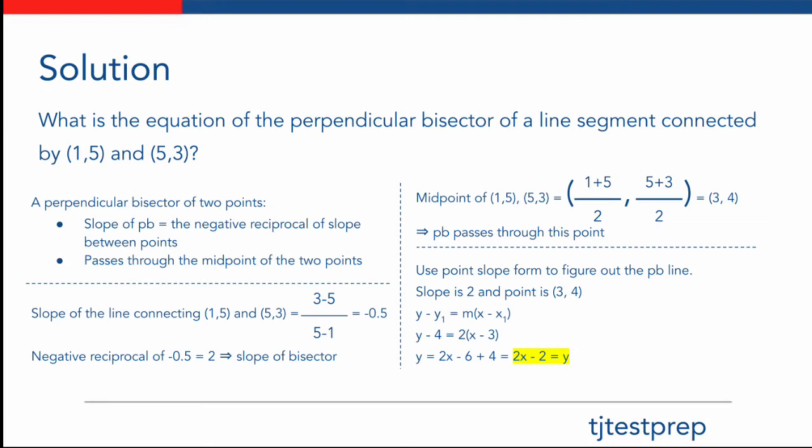Using point-slope form, we can figure out the equation for our perpendicular bisector. Plugging in the slope 2 and the point (3, 4), we get y minus 4 equals 2 times (x minus 3). That simplifies to y equals 2x minus 6 plus 4, which ultimately gives us the final equation y equals 2x minus 2.